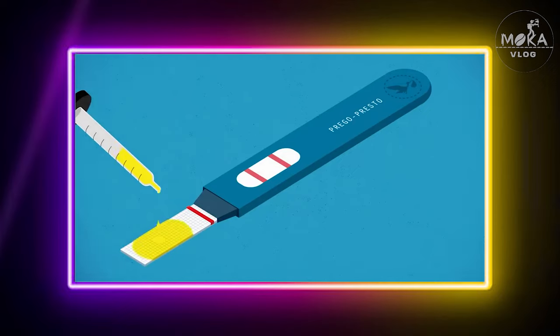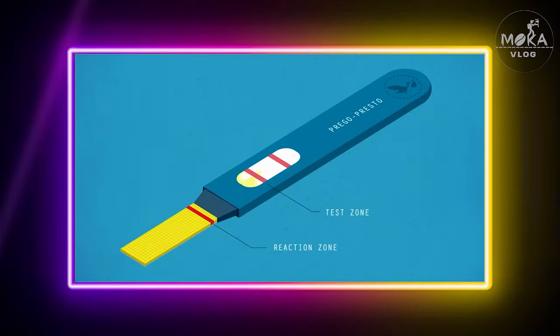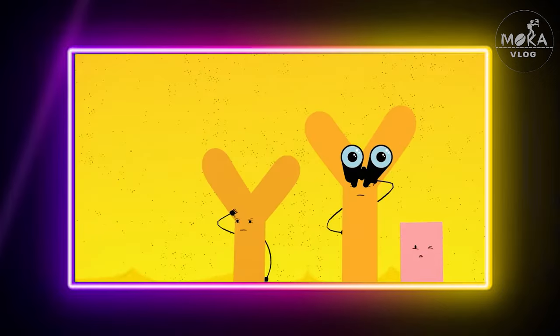In this test kit there are three portions. One is the sample area and the other gives the result. The result lines are T and C — T is the test line and C is the control line.